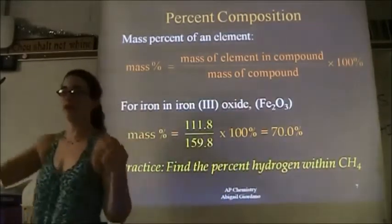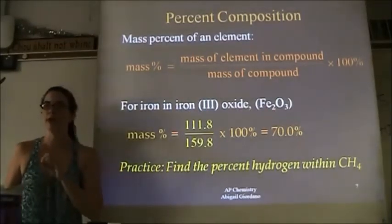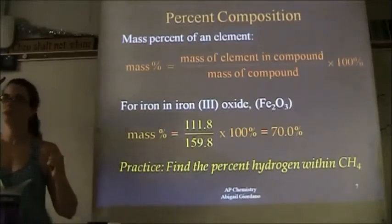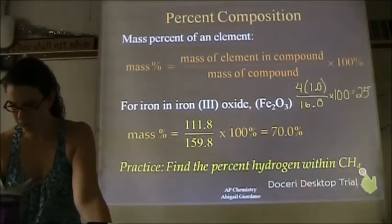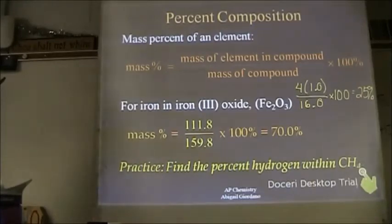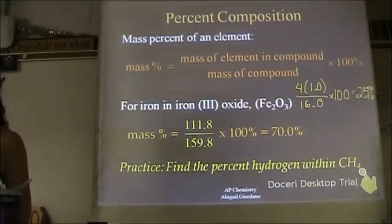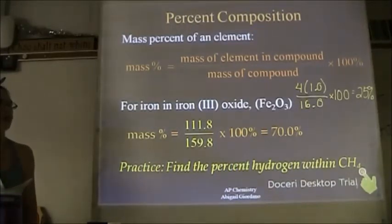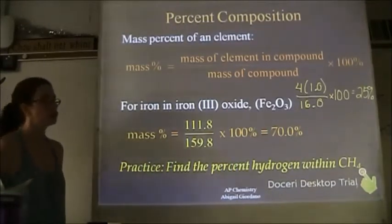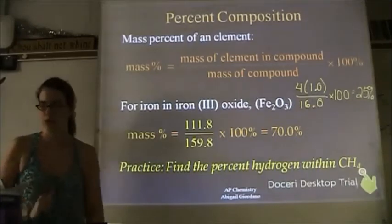If the compound is 70% iron, what is the percentage of oxygen? 30%. Here's the compound — that's methane, the gas that comes out of the jets on the tabletops. What percent of methane is made up of hydrogen? Methane is 25% hydrogen, which means it's 75% carbon. When you have compounds with more than two elements, you can't just do that quick subtraction.